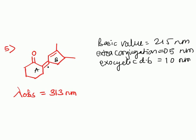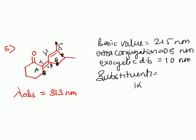For substituents: alpha, beta, gamma, and delta. There is one alpha, one beta, and two gamma substituents. The alpha substituent contributes 10 nanometers, beta contributes 12 nanometers, and two gamma substituents contribute 36 nanometers. The total comes to 313 nanometers, which is exactly equal to the lambda observed.